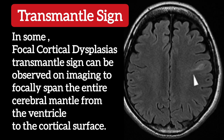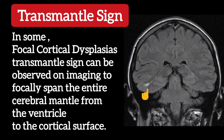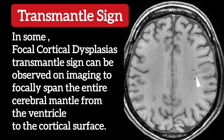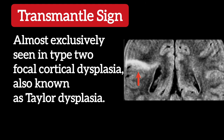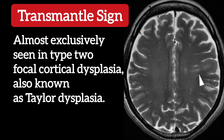In summary, focal cortical dysplasia's transmantle sign can be observed on imaging to focally span the entire cerebral mantle from the ventricle to the cortical surface. It is almost exclusively seen in type 2 focal cortical dysplasia, also known as Taylor dysplasia.